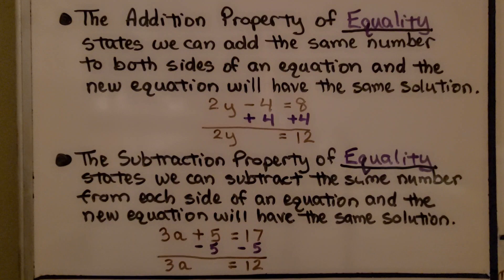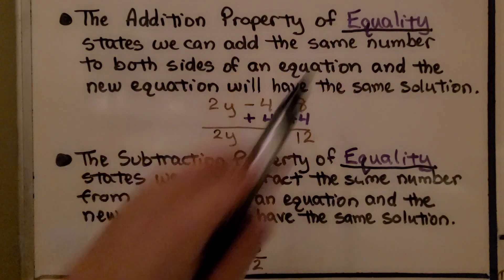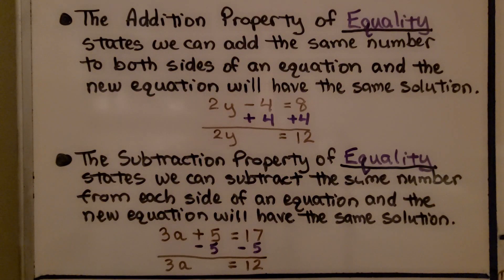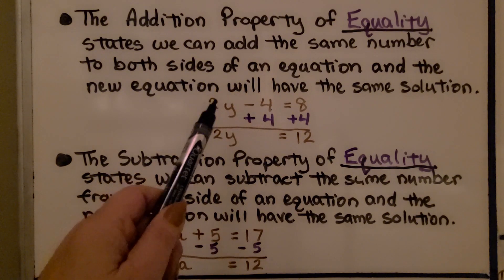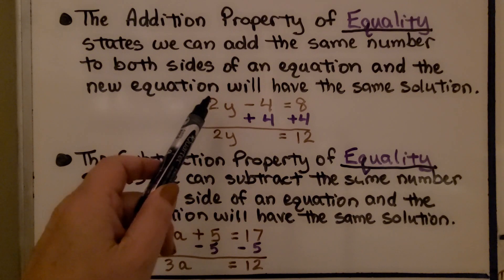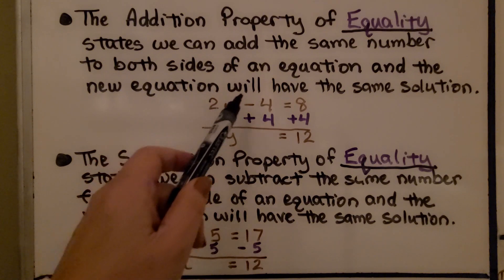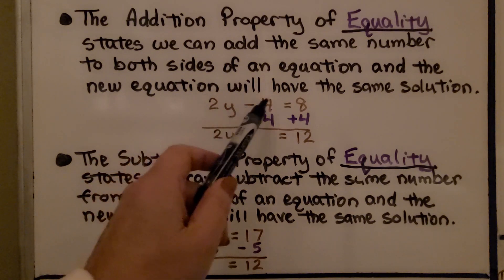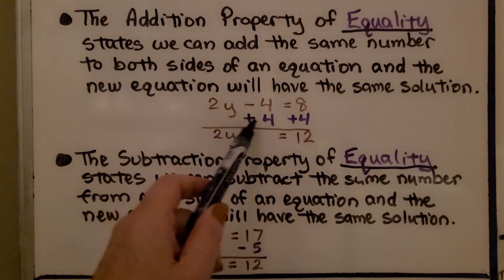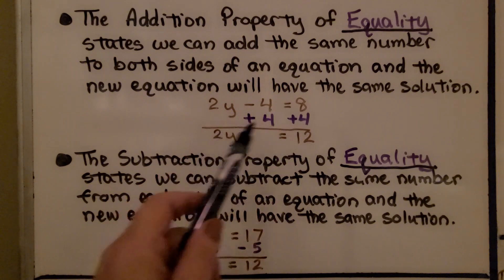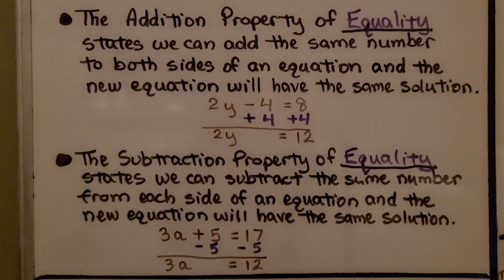The addition property of equality states that we can add the same number to both sides of an equation, and the new equation will have the same solution. So if we have 2y minus 4 equals 8, we can use the addition property of equality to add 4 to each side, and we'll have 2y equals 12.